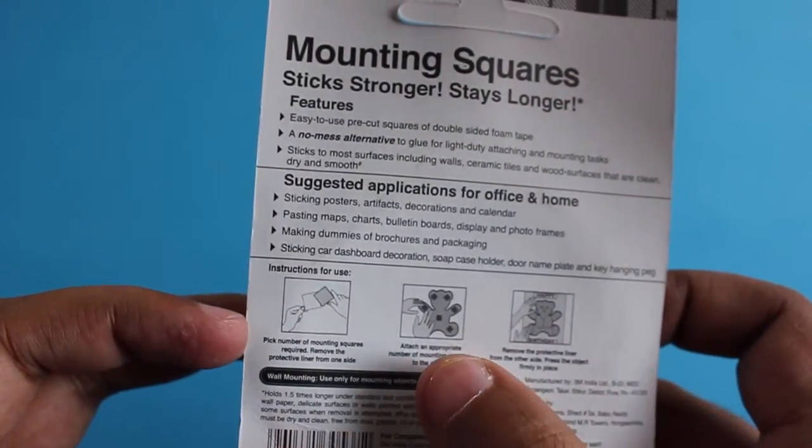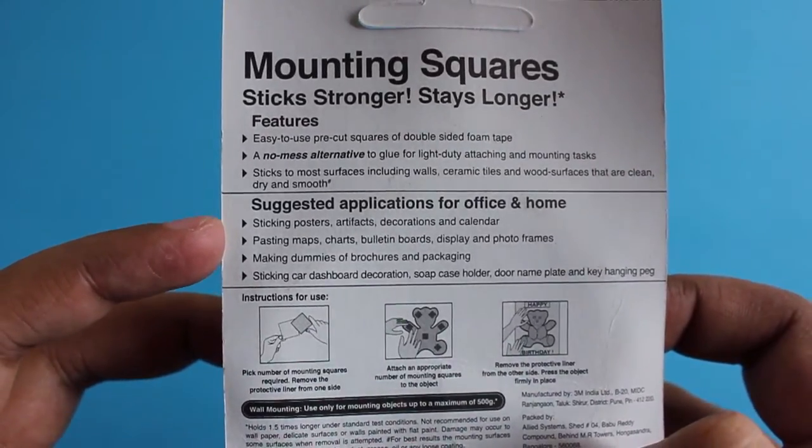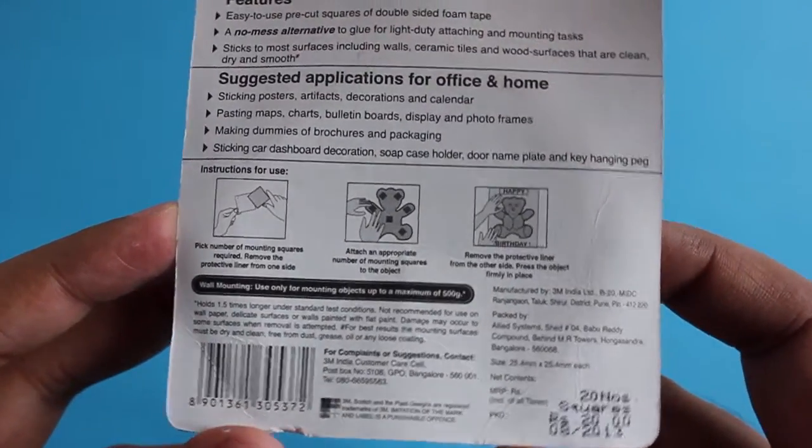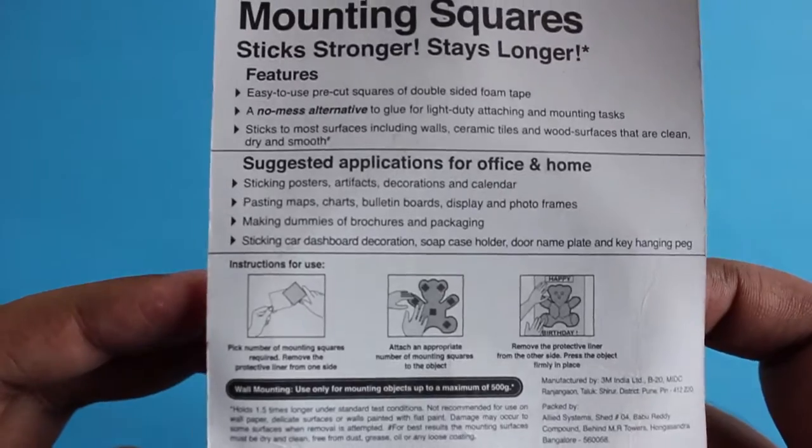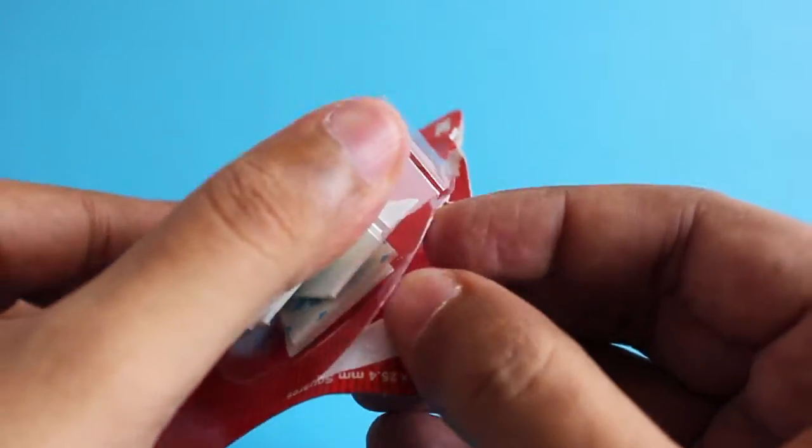Just open it, peel it, stick it, and mount it onto the wall. Again, those are the instructions. Cost is around 20 rupees. For that you get around 20 pieces, so it translates to roughly one rupee per piece. 20 rupees is around 20 cents or so.